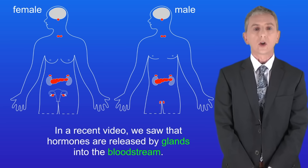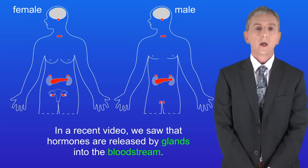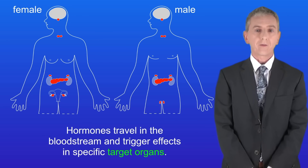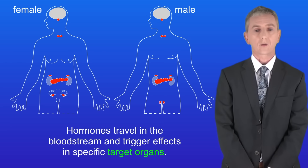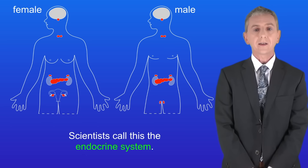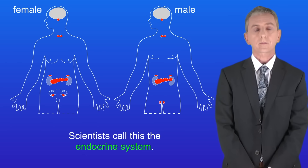In a recent video we saw that hormones are released by glands into the bloodstream. Hormones travel in the bloodstream and trigger effects in specific target organs. Scientists call this the endocrine system.